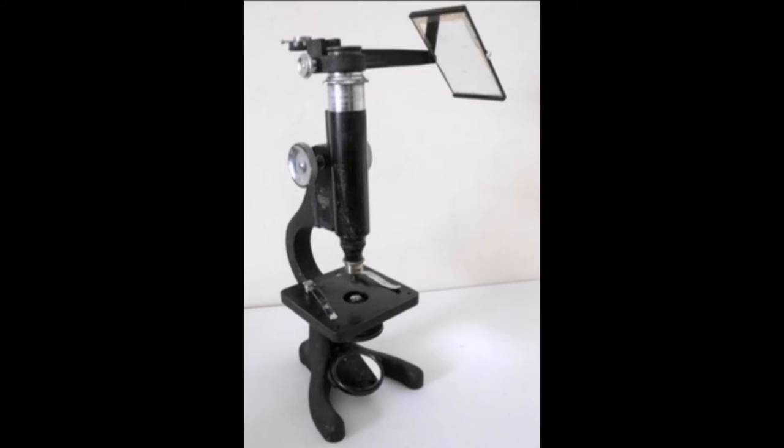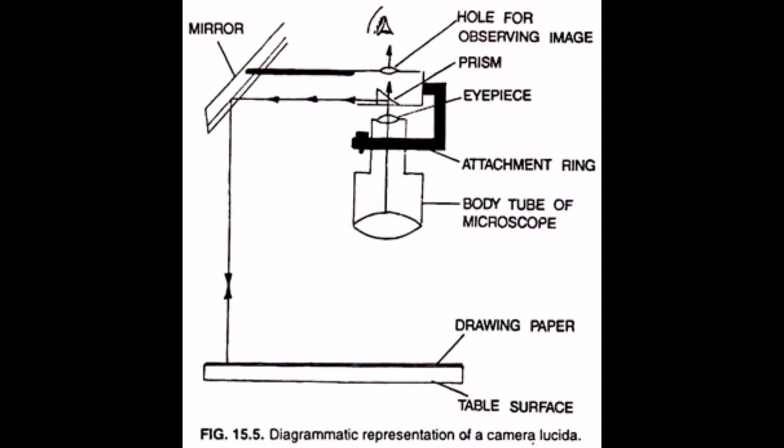A microscopic image of the object is reflected by the prism onto the plane mirror and therefrom the image is reflected on the plane paper. The observer moves the pencil on the lines of the image and draws a correct and faithful figure of the object on the paper.